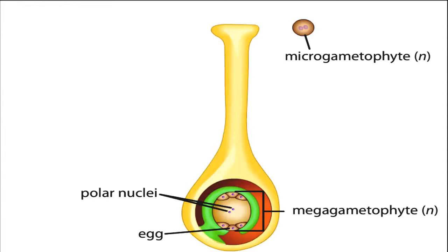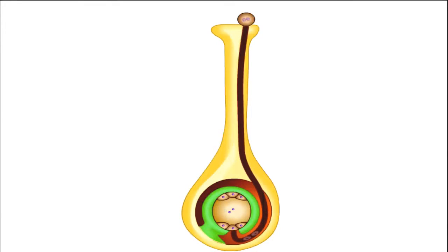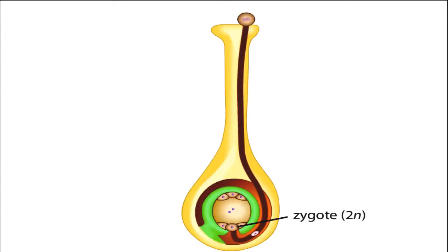The pollen grain pollinates the female parts of the flower by landing on the stigma. Here, the pollen grain germinates and a pollen tube grows down the style until it meets the female gametophyte. Two sperm from the pollen grain travel through the pollen tube and enter the female gametophyte. One fertilizes the egg, forming a diploid zygote. The other fertilizes two polar nuclei, forming a triploid cell.